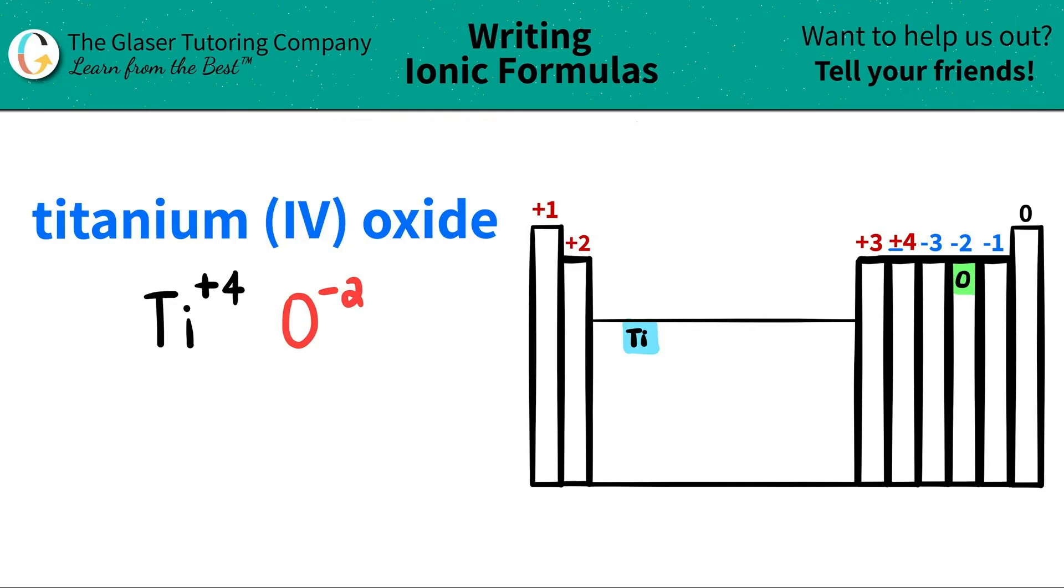Now, since I have both elements and I have both charges, I do this little trick where I take the charges and I crisscross down to just see how many of each element I need. So this plus four crisscrosses down telling me that I need four oxygens.